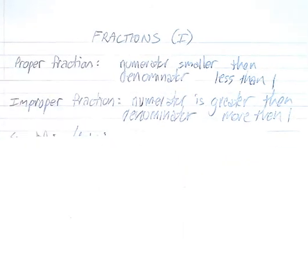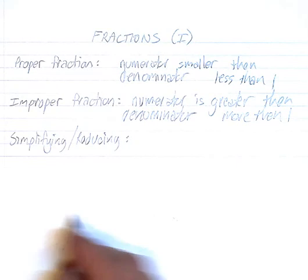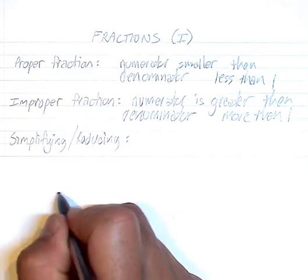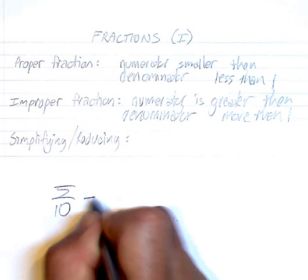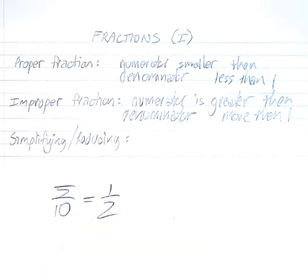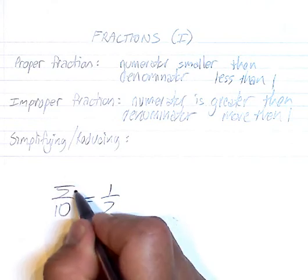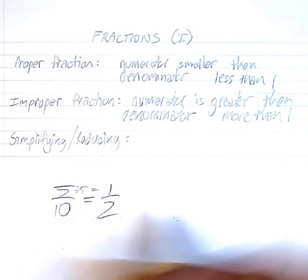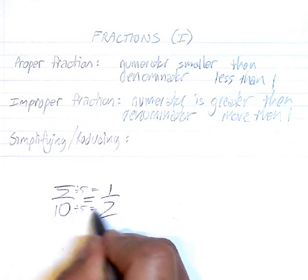Now, what I want to talk about, one last thing in this lesson, is simplifying or reducing. So if you have something like 5 tenths, I'm hoping that you can see that you can reduce that to 1 half. It's the same thing. 5 goes into 5 once, so you divide 5 divided by 5, you get 1. 10 divided by 5, you get 2.